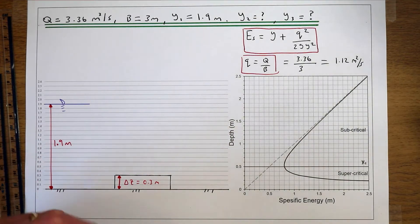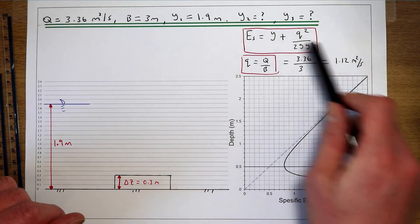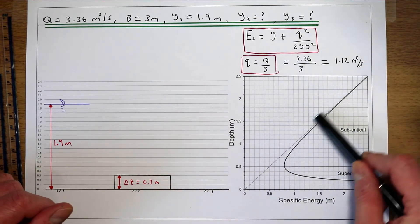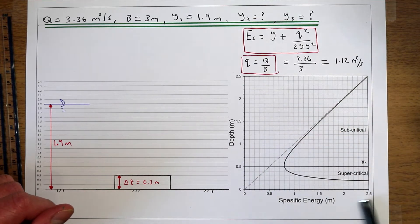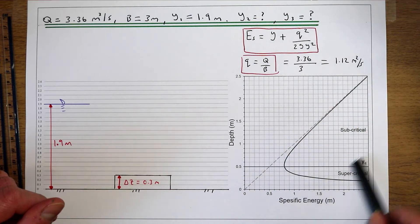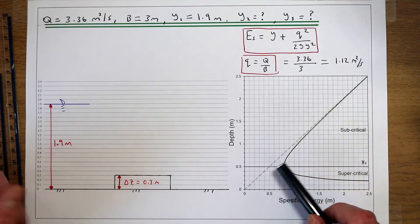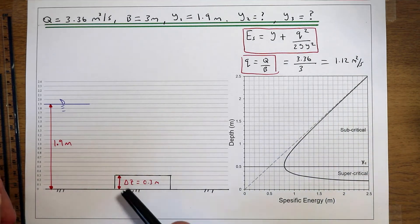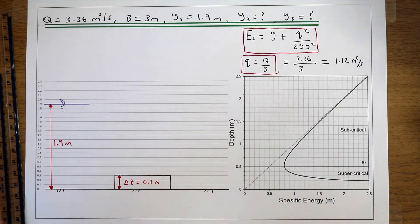Once we've done that calculation, using this equation we can plot the relationship between flow depth and the specific energy in our flow. I've done this using Microsoft Excel and printed it off, and that will let us work out what's going to happen to the flow depth in our river.